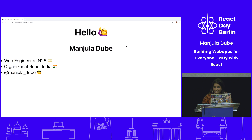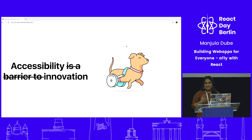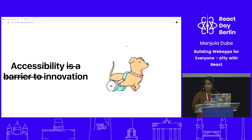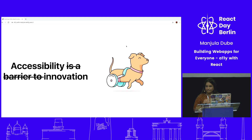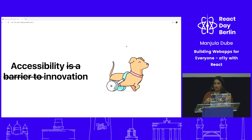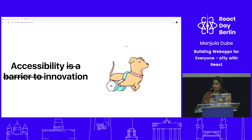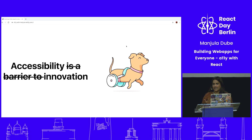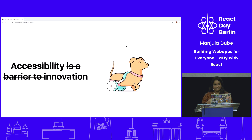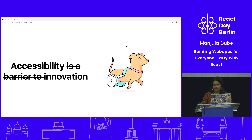I don't think accessibility is like a barrier to innovation, because we're already so innovative about technology. Nothing stops us from building accessible apps. It's next level to innovation — that's what I see accessibility as.